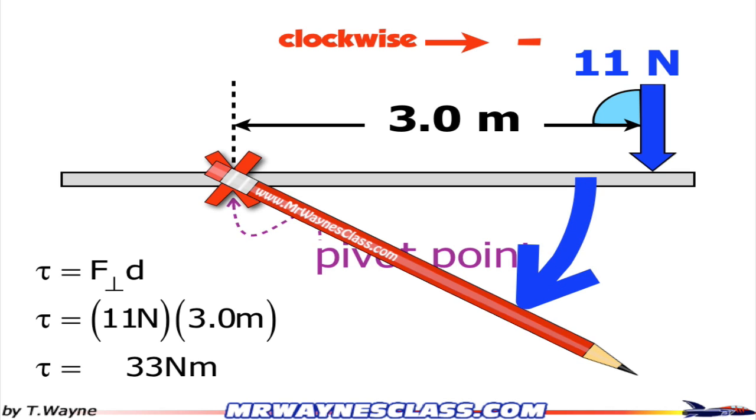And clockwise is defined as being a negative torque, so this torque is a negative 33 Newton meters.